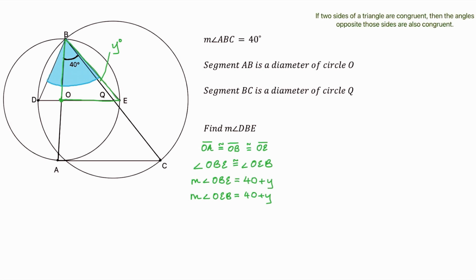Now let's do the same with the third given, using the other circle. BC is a diameter of circle Q, and circle Q is the larger circle with center Q, which I'm labeling in blue. If BC is a diameter of circle Q, then QB and QC are radii of circle Q, which means QB and QC are congruent.